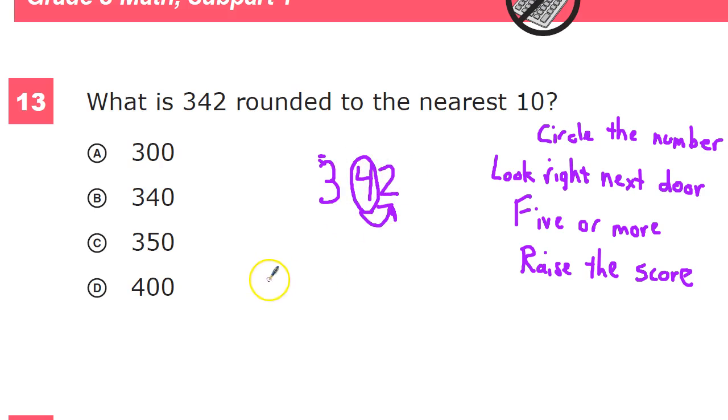If the number to the right is 5 or more, you want to raise that value up by 1. If the number to the right is 4 or less, that number is going to stay the same.